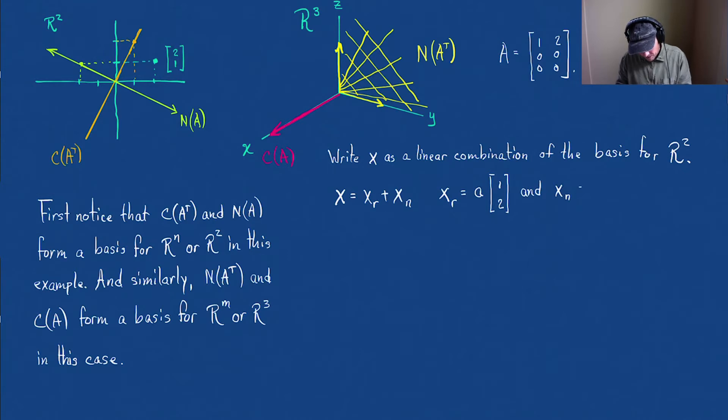Our null space is just, that's the row space, the null space, yep. And the null space is some linear combination of B, we'll call it B, times, what do we have? Minus 2, 1. Minus 2, 1.